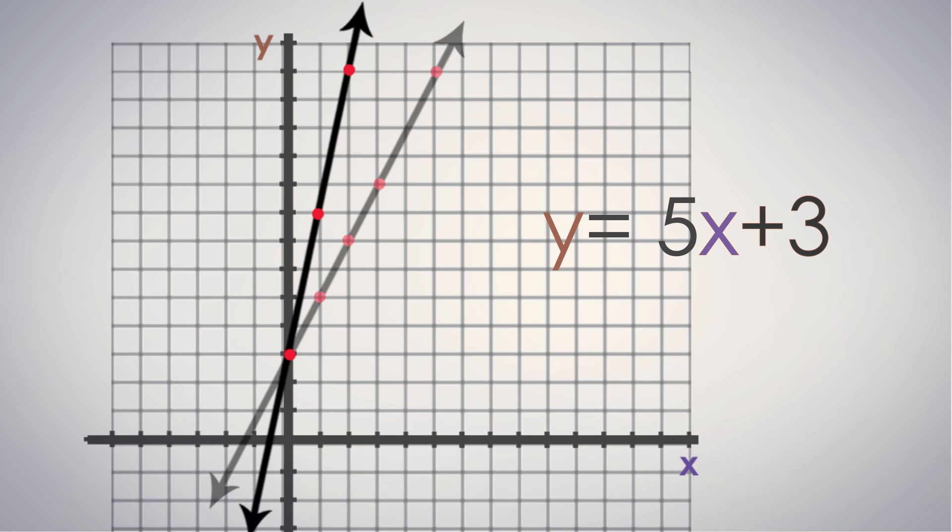Now let's look at what happens when we change the initial amount of fans. Let's say we start the tour with 10 fans. Notice how the line shifted up and the new y-intercept is 0, 10.